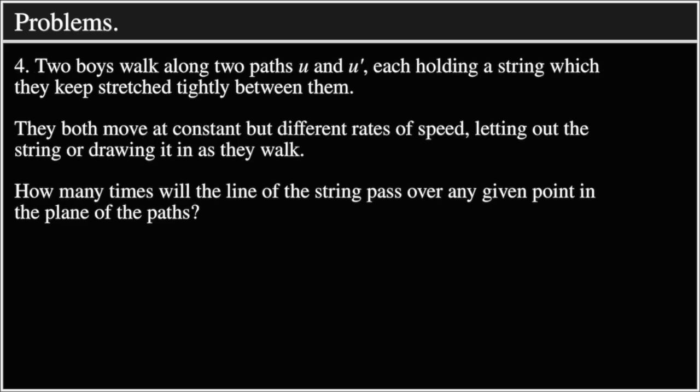Problem 4: Two boys walk along two paths, U and U', each holding a string which they keep stretched tightly between them. They both move at constant but different rates of speed, letting out the string or drawing it in as they walk. How many times will the line of the string pass over any given point in the plane of the path?